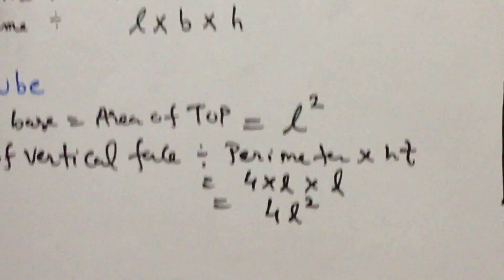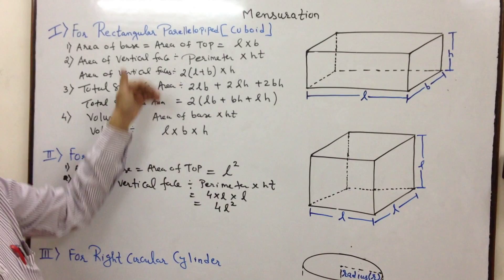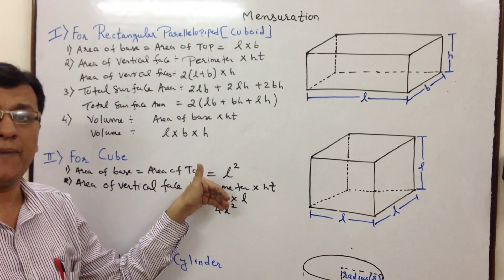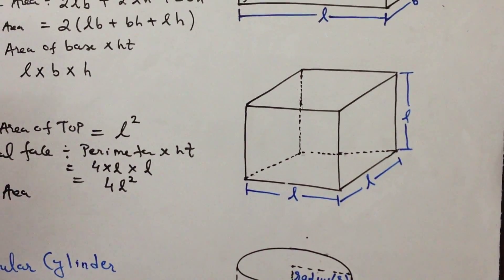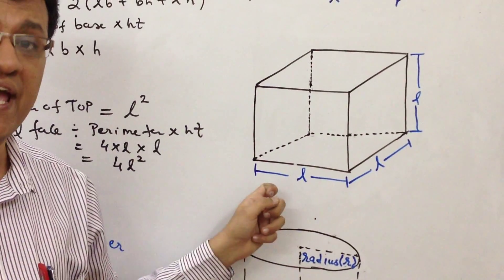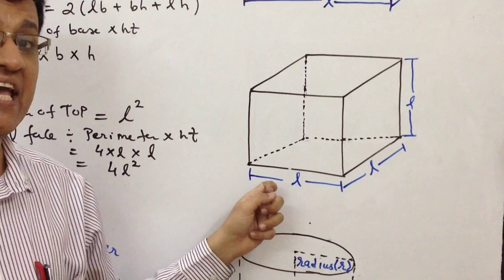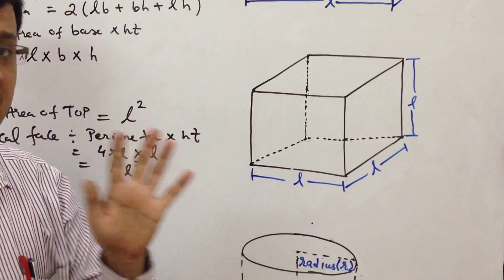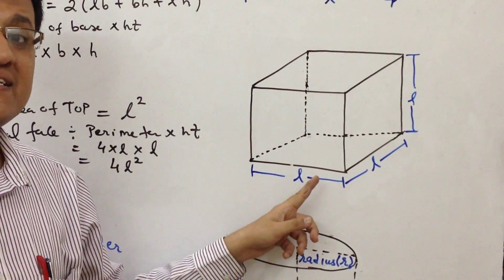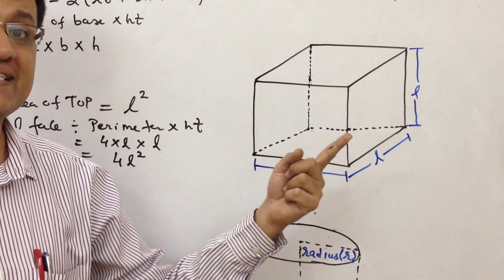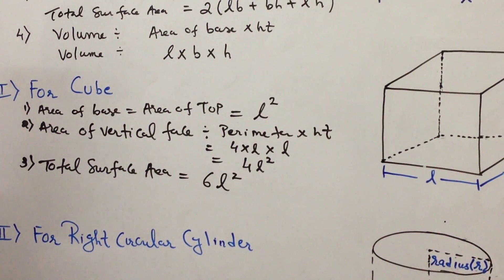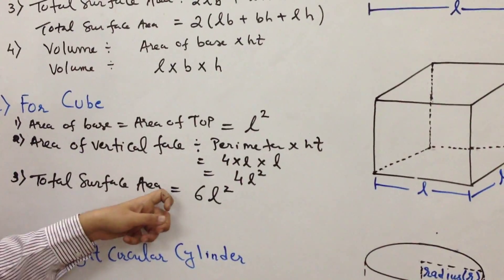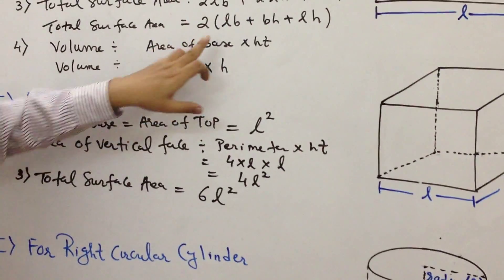In a rectangular parallelepiped, every face was a rectangle, so perimeter was 2(length + breadth) into height. For a cube, it is perimeter into height, where the perimeter of a square face is 4 into side. Side is L, so perimeter is 4L. Height is also L, giving 4L into L, which is 4L squared. Area of vertical faces equals 4L².